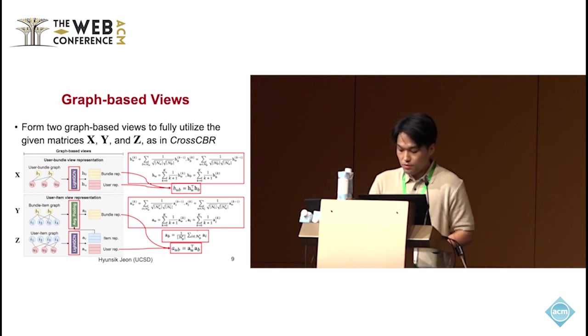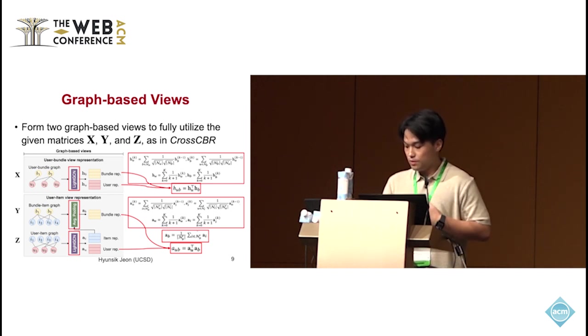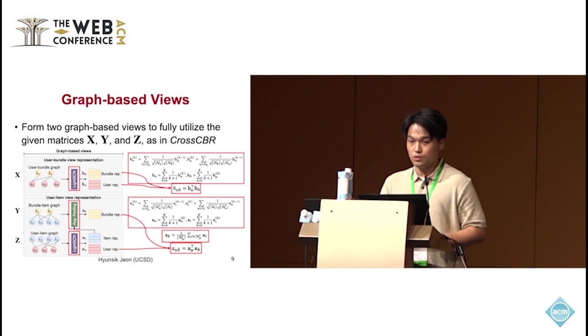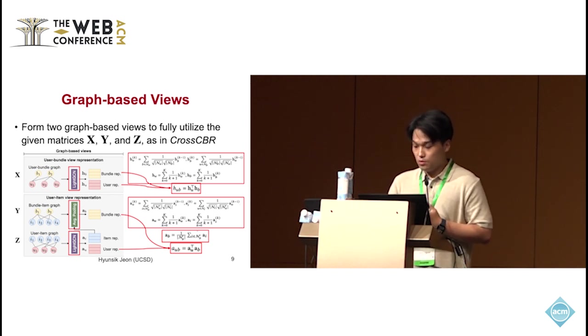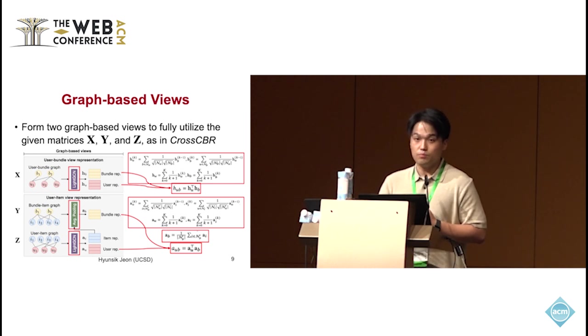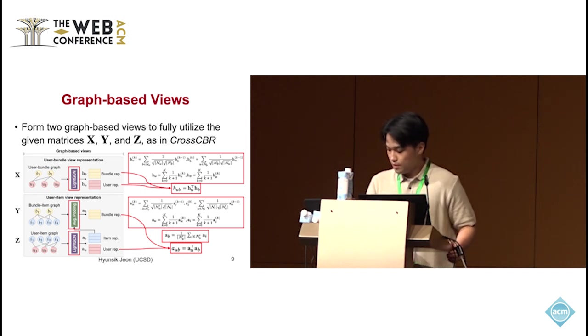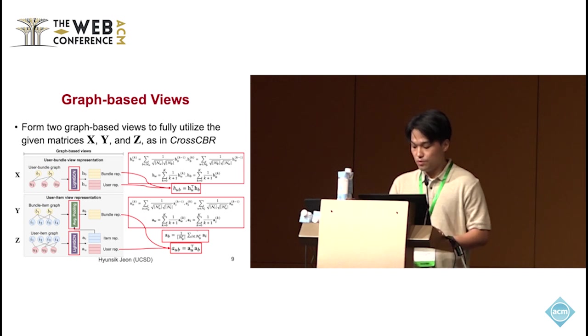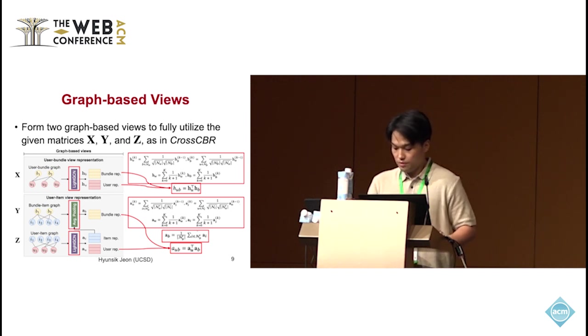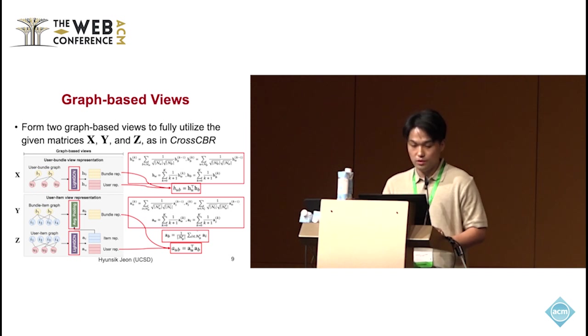In the user-bundle view, we obtain the representations of users and bundles directly using LightGCN. And the relevance scores between users and bundles are computed by an inner product. In the user-item view, we first use LightGCN to obtain the representations of users and items, and then use an average pooling for bundle representations. Here, we obtain another relevance score using an inner product.